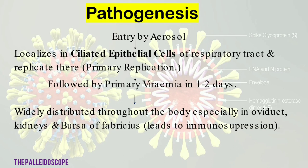The pathogenesis — the process by which the disease progresses: entry is by aerosol, mainly by inhalation. It then localizes in the ciliated epithelial cells of the respiratory tract and replicates there, so primary replication occurs here. This is followed by primary viremia in 1 to 2 days — that is, it is found in the blood in 1 to 2 days. It is then widely distributed throughout the body, especially in the oviduct, kidneys, and bursa of Fabricius, leading to immunosuppression.